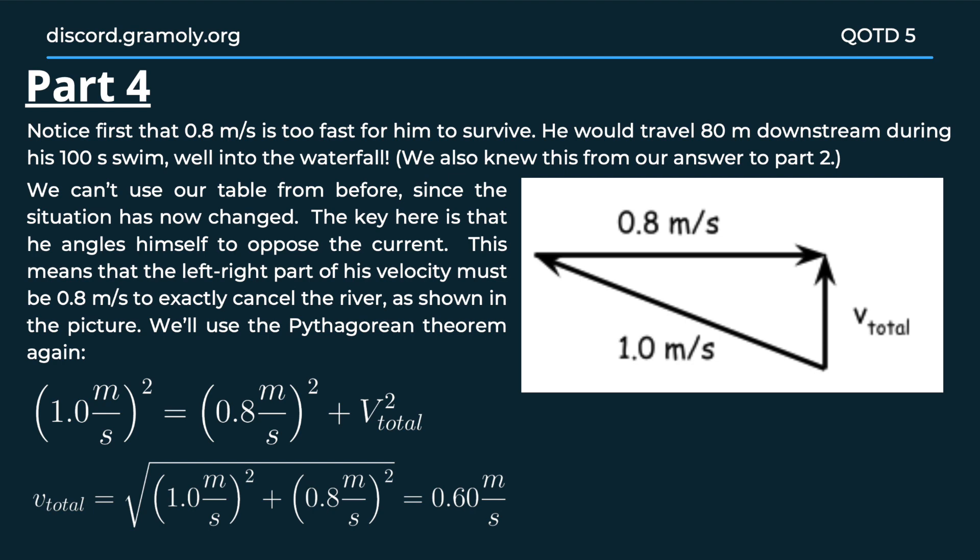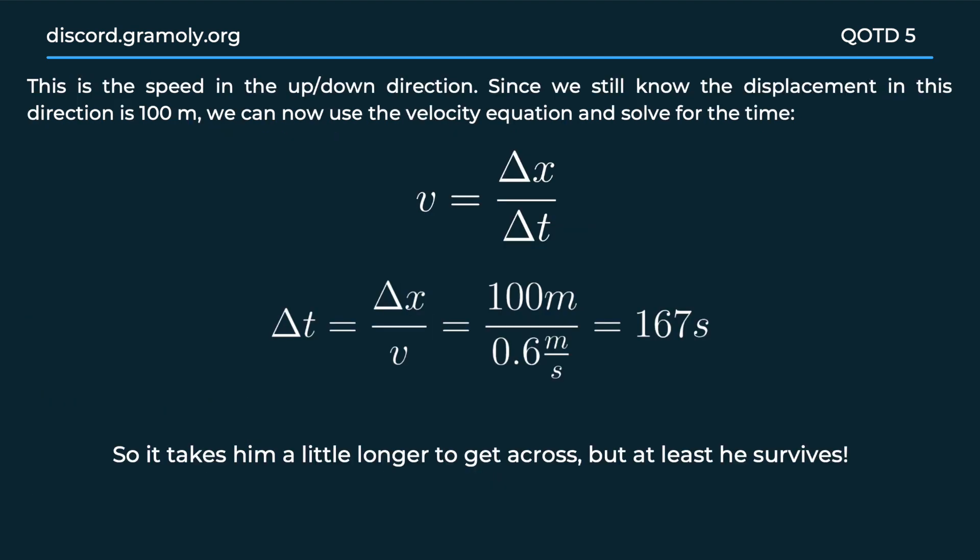From this we can find that the net velocity would be 0.6 meters per second, which is in fact a famous Pythagorean triplet: 6, 8, and 10. So we know that the displacement is 100 meters, the velocity is 0.6 meters per second, and from that we can calculate that the time would be 167 seconds.